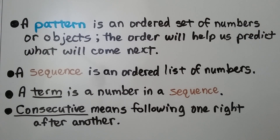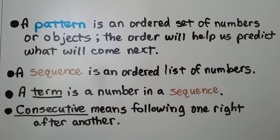A pattern is an ordered set of numbers or objects. The order will help us predict what will come next. A sequence is an ordered list of numbers. A term is a number in a sequence. And consecutive means following one right after another.